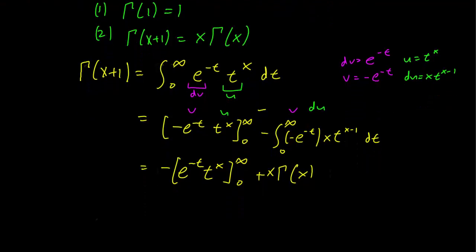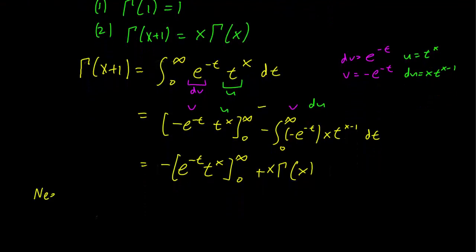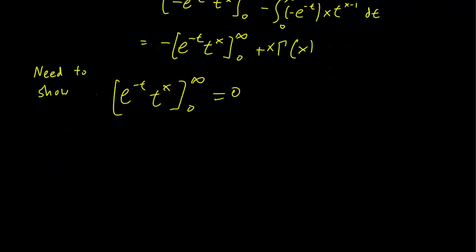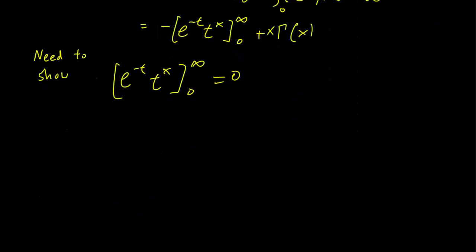So what's left to do is we need to show that e to the minus t times t to the x from infinity to 0 is equal to 0. So let's calculate to see what that is.